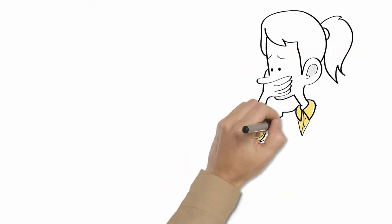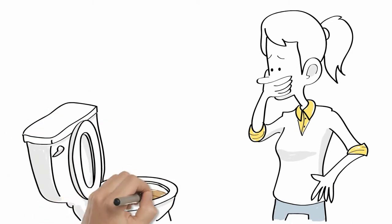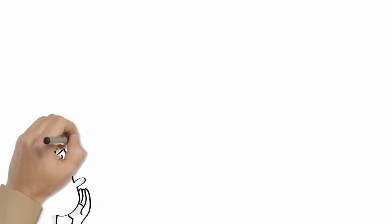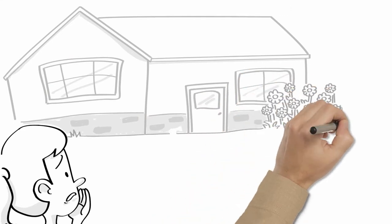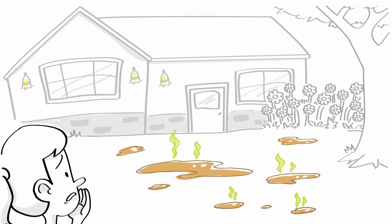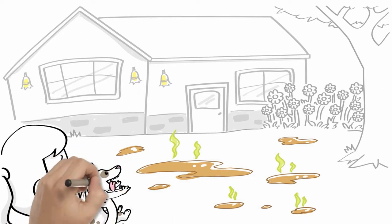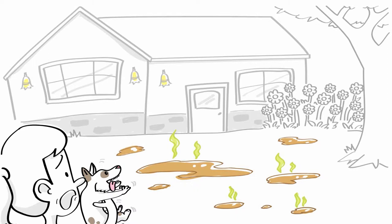One day Carrie noticed the drains were running slow and there were odors inside the house. Then she went outside and noticed an odd unpleasant smell coming from the backyard. She was greeted by a soggy yard. Blocking the dog from running through the mess, she knew instantly what the problem was and that it wasn't going to be an easy or inexpensive fix.